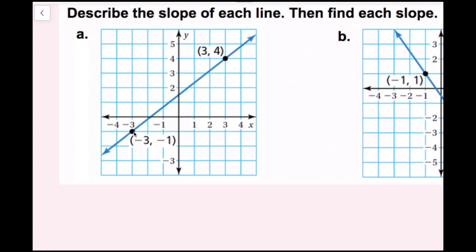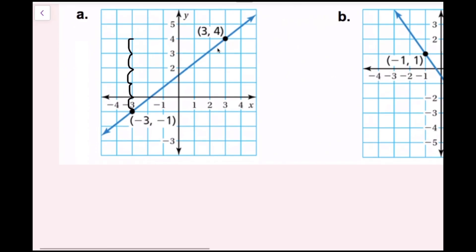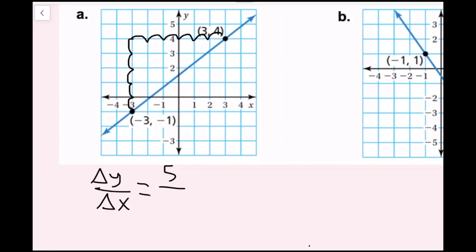I'm just going to count how many spaces it takes. Going up, I count five spaces to get to the same level as the other point. So my change in y — delta y — is equal to five, because up five in math is positive five. Now going from there to the next point, I count six spaces to the right. In math, that's positive six. So that gives me five over six, meaning the slope of this line is five-sixths.